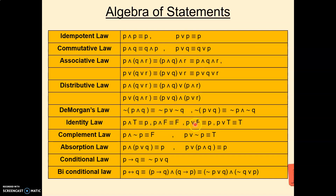P∨F is equivalent to P. If P is true, T∨F = T. If P is false, F∨F = F. So in both cases the answer is the value of P. And P∨T is equivalent to T. If P is true, T∨T = T. If P is false, F∨T = T. So in both cases the answer is true.